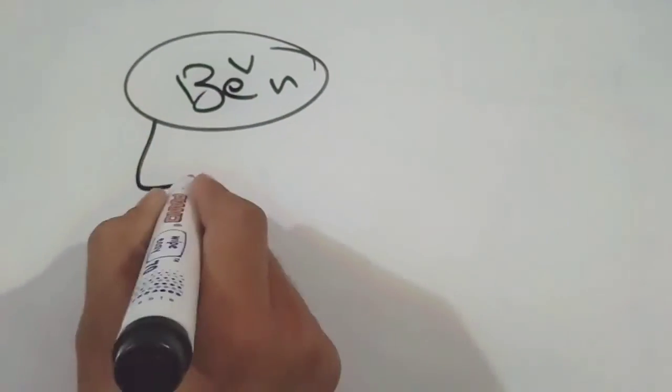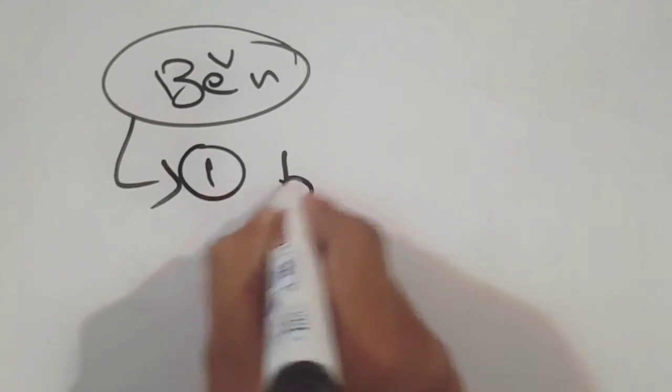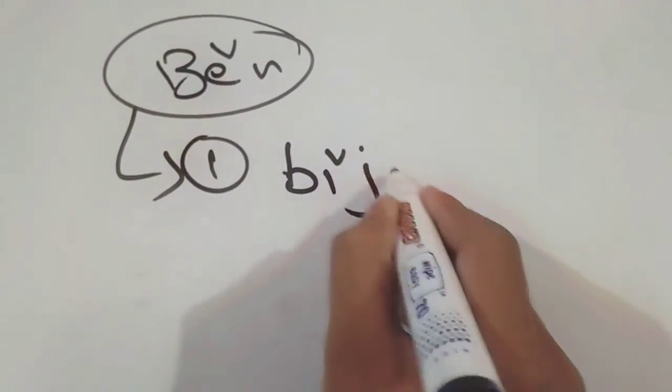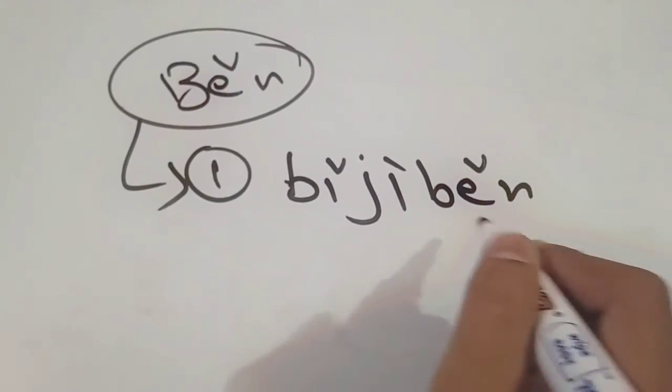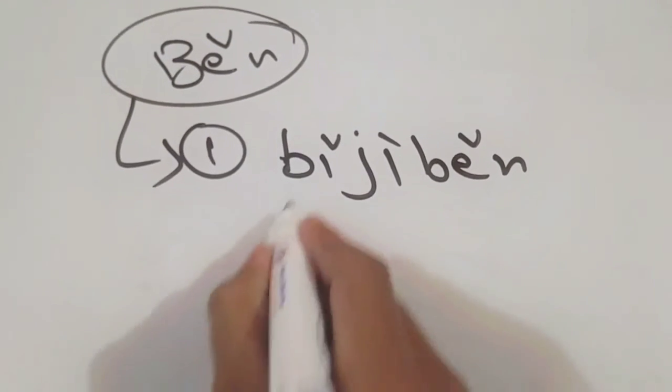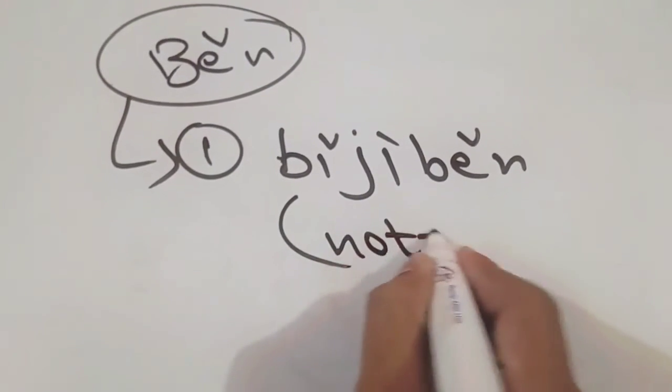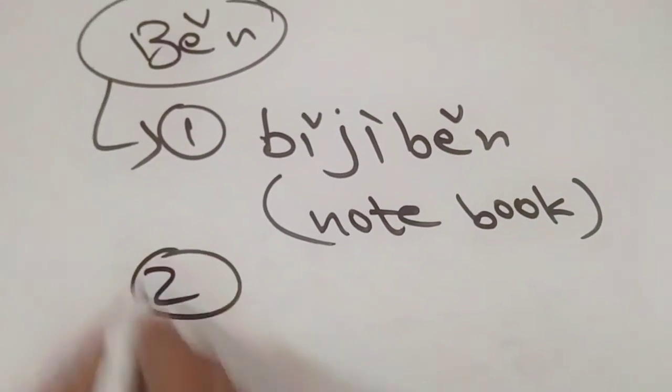The word běn is a measure word for book. For example, example number one: bǐjìběn. Pronunciation again: bǐjìběn. Pronunciation again: bǐjìběn means notebook. And second example...